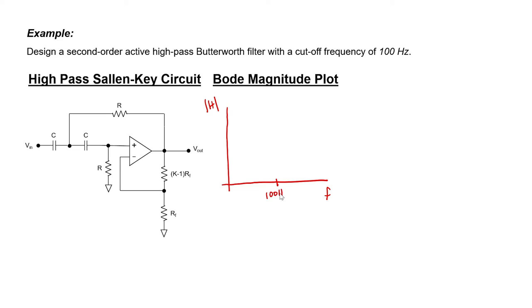What do we want the filter to actually do? The cutoff frequency is 100 Hz. It's a high-pass filter, so the circuit should pass high frequencies and it should block the lower frequencies.